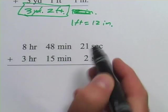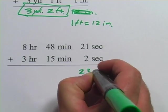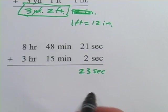Let's try this. Twenty-one seconds plus two seconds, that's twenty-three seconds. I haven't reached sixty, so I can just leave that the way it is.